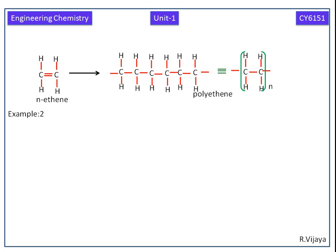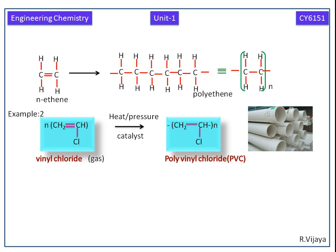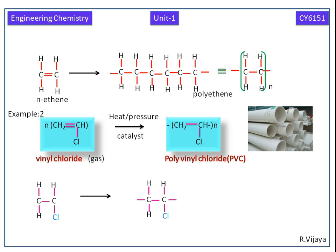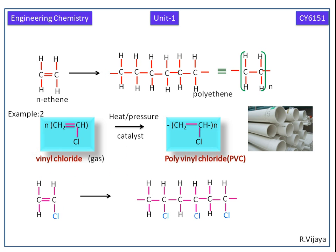Next we see the second example. N number of vinyl chloride undergoes polymerization and we get polyvinyl chloride, which is used in PVC pipes. Now we can see how polyvinyl chloride is produced from N number of vinyl chloride. The simplest form of polyvinyl chloride is –(CH₂–CHCl)–n times.